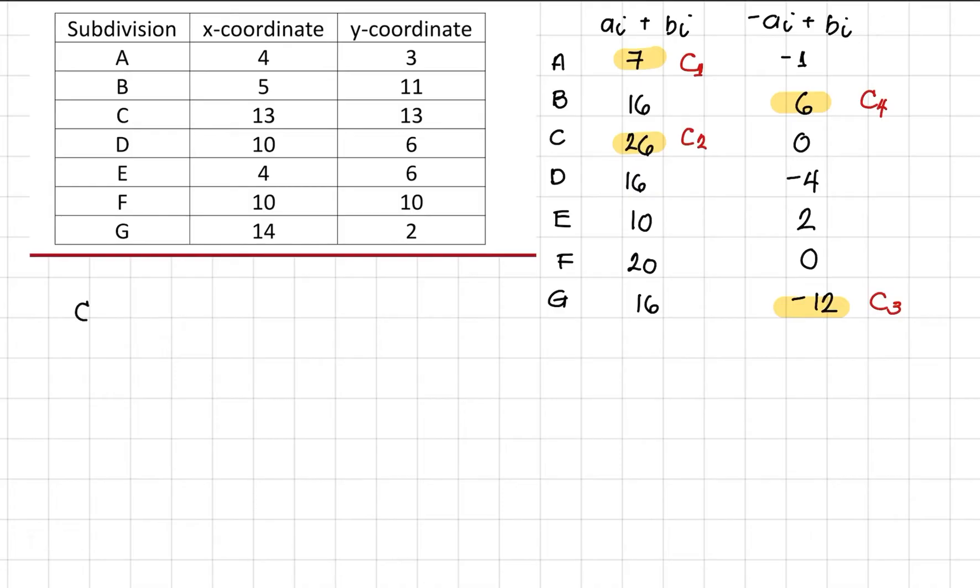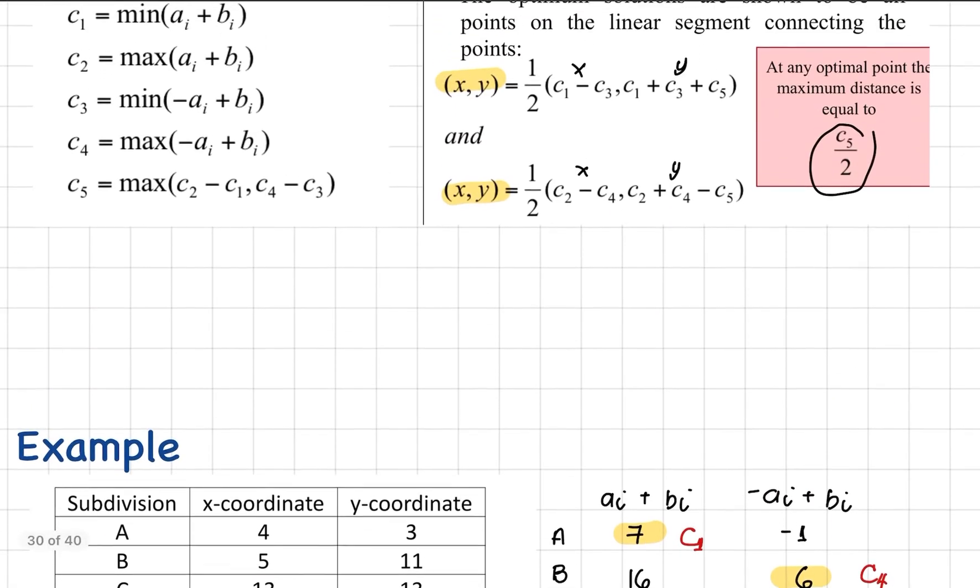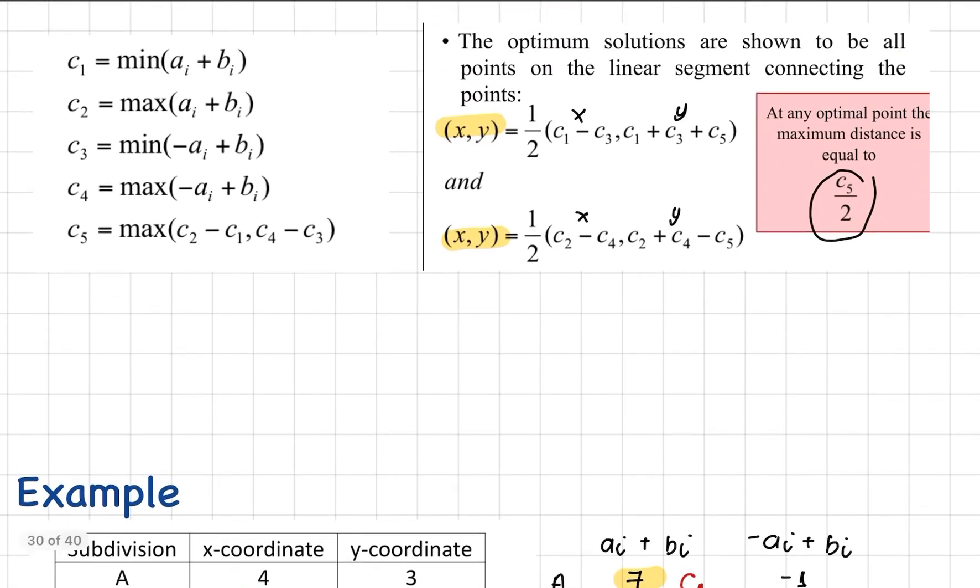Let me rewrite the answers. C1 is 7, C2 is 26, C3 is negative 12, and then C4 is 6.